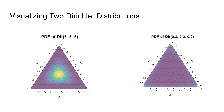On the left of this slide, we've plotted the Dirichlet distribution with parameter (5, 5, 5). Observe that this Dirichlet distribution has its greatest density in the center of the simplex. On the right of this slide, we've plotted the Dirichlet distribution with parameter (1/5, 1/5, 1/5). Observe that this Dirichlet distribution has its greatest density in the corners of the simplex, which we see by the yellow in the corners.